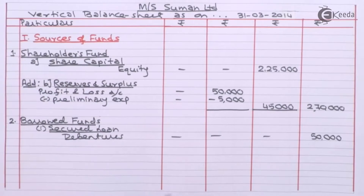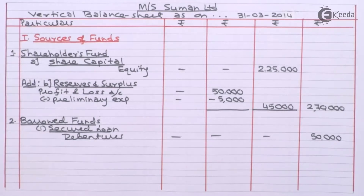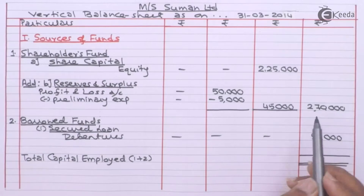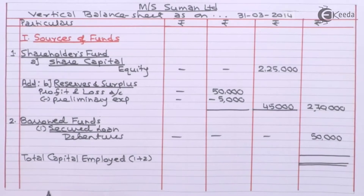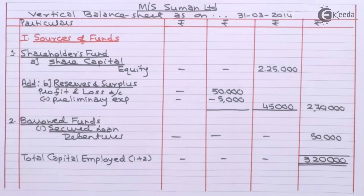Total shareholders fund comes to 2,70,000. Next we have borrowed funds: debentures 50,000. Total borrowed funds are 50,000. This is added to shareholders fund to arrive at capital employed: shareholders fund 2,70,000 plus borrowed funds 50,000 equals total capital employed of 3,20,000.